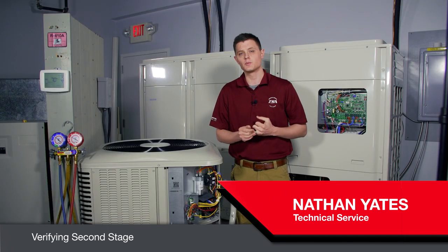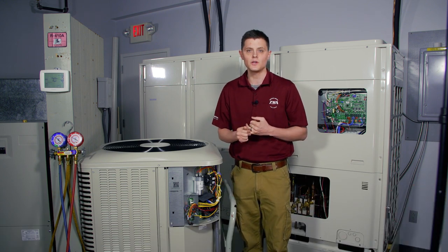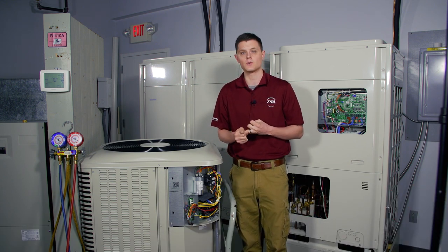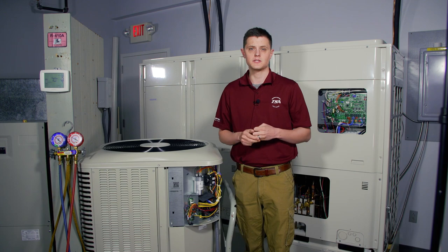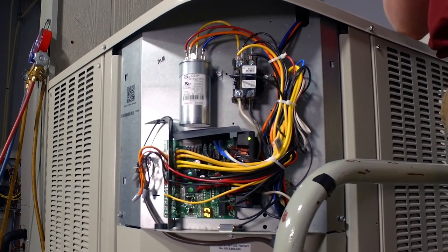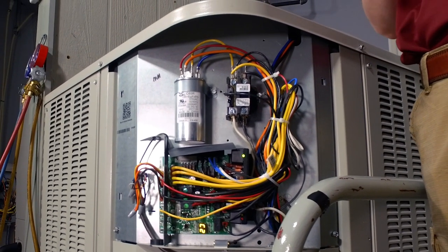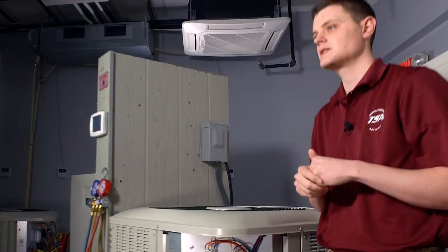There's a little digital display on our defrost board that tells you a few things. One, whether you're in heating mode or cooling mode, and also what stage you're in. On the defrost board, currently it says C2, which is telling me we're in cooling mode, and the number two stands for we're in second stage currently.